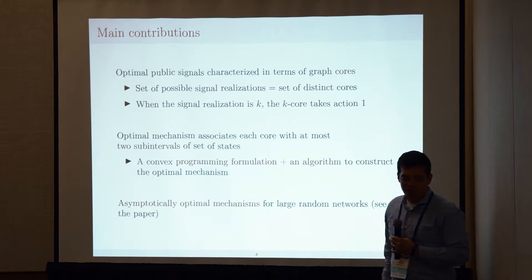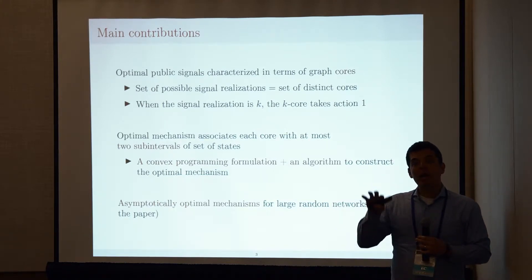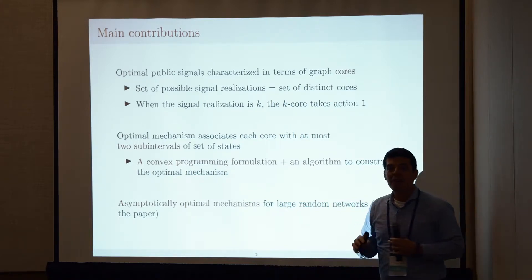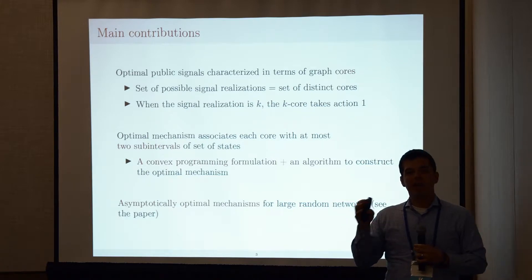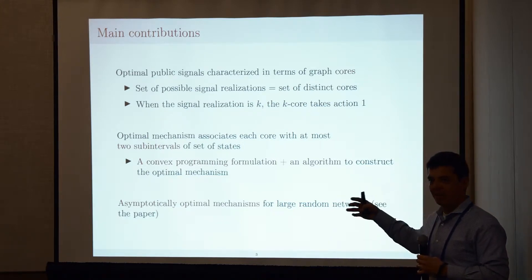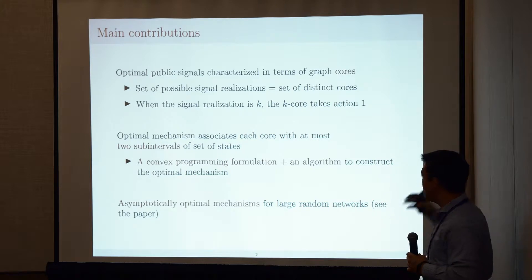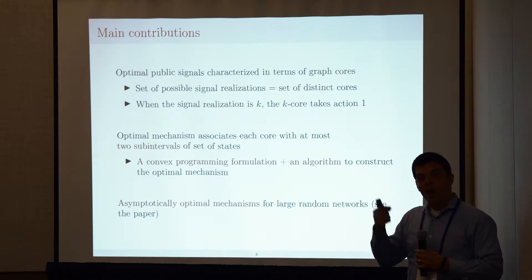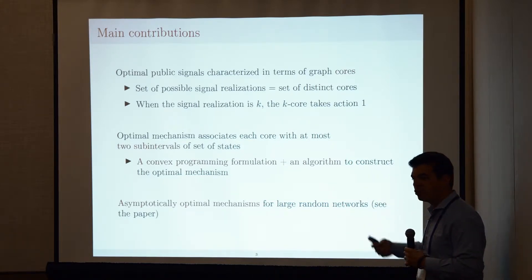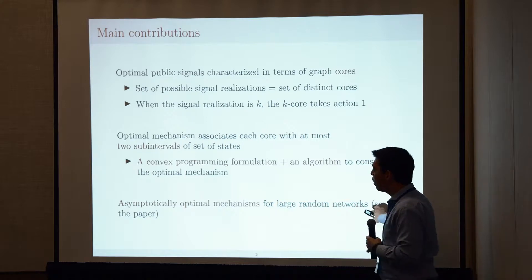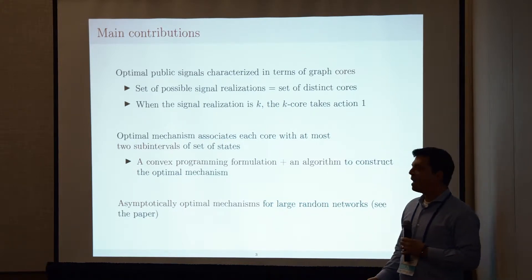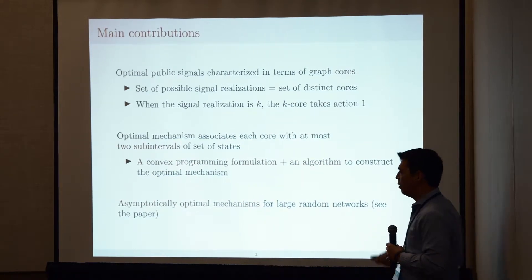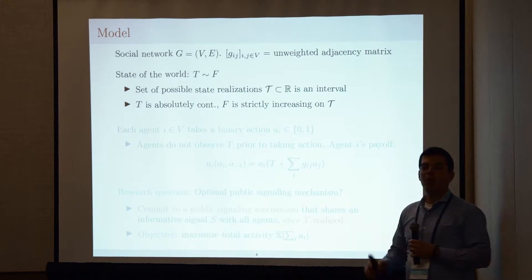Here is what I am not going to talk about today — it's in the paper and I'm happy to discuss offline. For the talk I stick to a setting where I know the network, but in the paper I explore a setting where I know just the degree distribution of the network with a large number of nodes. It turns out that for large random networks you can asymptotically characterize the size of the core and, using just the degree distribution, construct asymptotically optimal mechanisms.